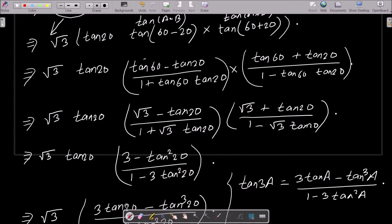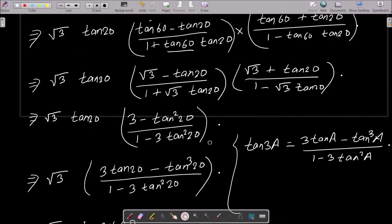This is √3. For tan20°, the value of tan60° is √3 minus tan20° divided by (1 + √3 tan20°). The tan60° value is √3, so √3 plus tan20° divided by (1 - √3 tan20°).